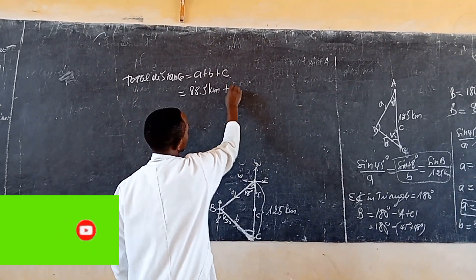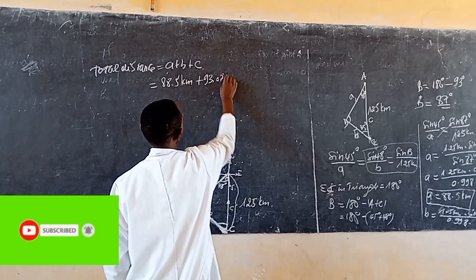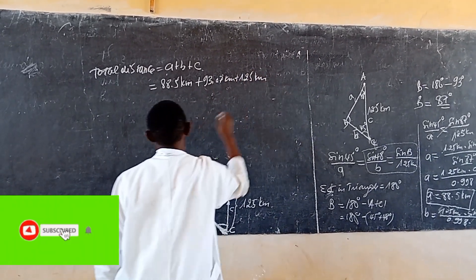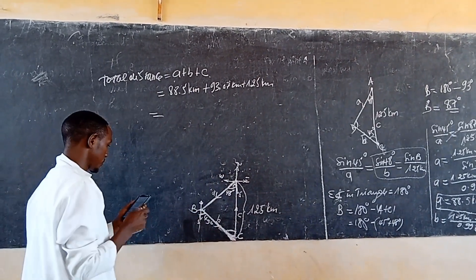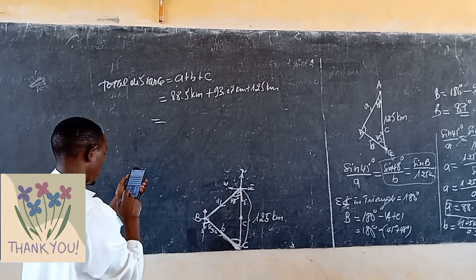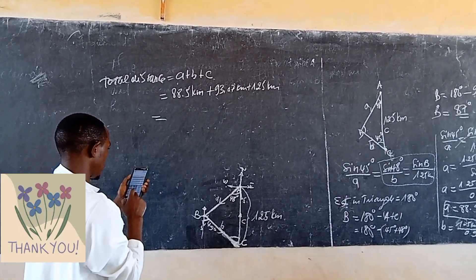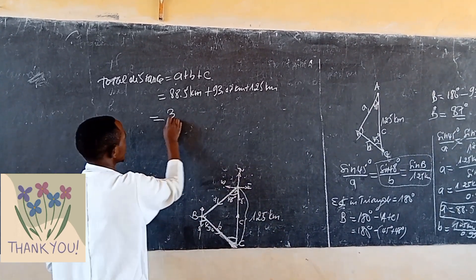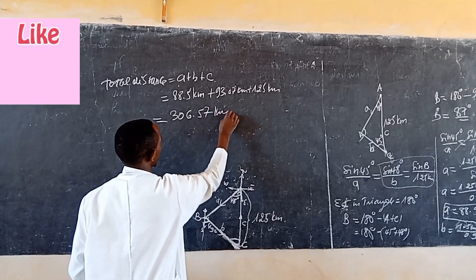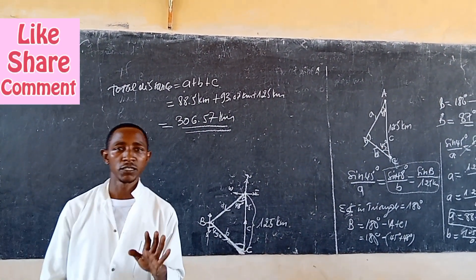So the total distance equals A plus B plus the length AC, which equals 88.5 km plus 93.0 km plus 125 km. So the total length traveled by the boat is approximately 306.5 km. Thanks for watching this video.